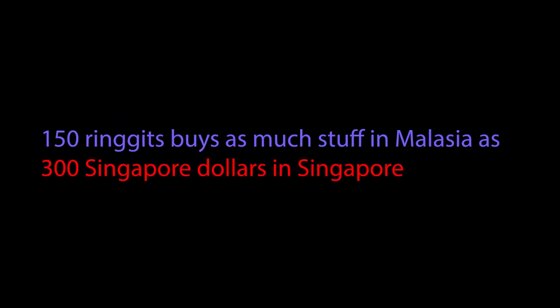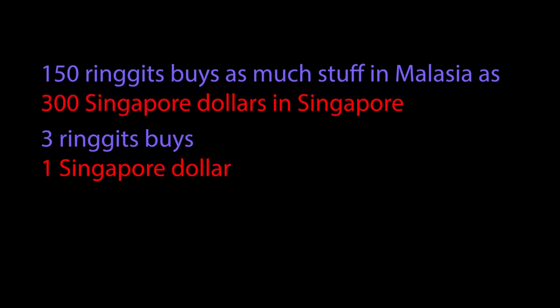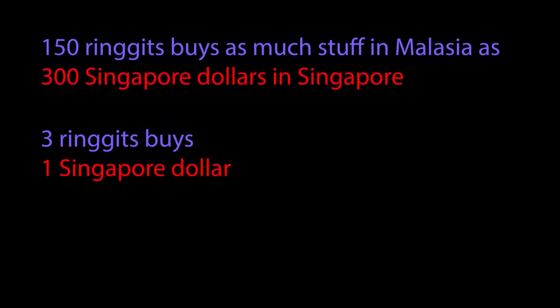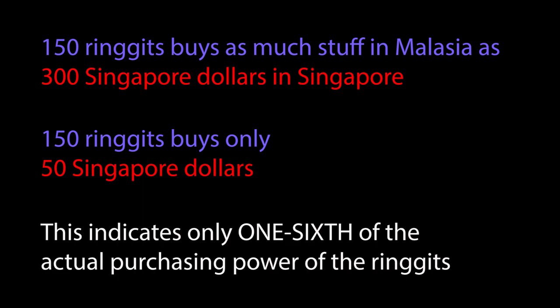This means that someone with 150 ringgits in Malaysia could buy as much as someone with 300 Singapore dollars in Singapore. At the moment, the exchange rate in the foreign exchange market is 3 ringgits per Singapore dollar. So if we looked just at that, we would consider 150 ringgits to be equivalent to 50 dollars, and that would misrepresent the purchasing power of the money holdings.